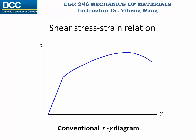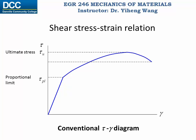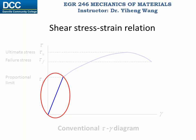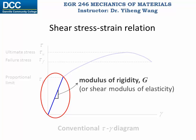Just like the relation between normal stress and normal strain, the relation between shear stress and shear strain can also be determined by experiments, and represented by the conventional shear stress tau versus shear strain gamma diagram. Just like the normal stress-strain diagram, the shear stress-strain diagram also has a proportional limit, ultimate shear stress, and failure shear stress.